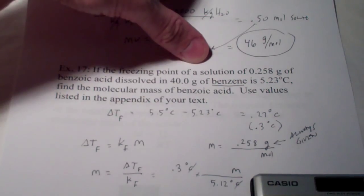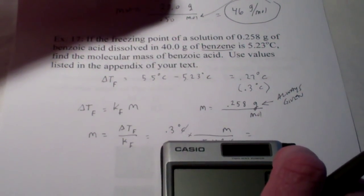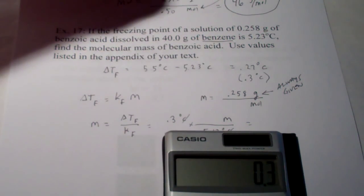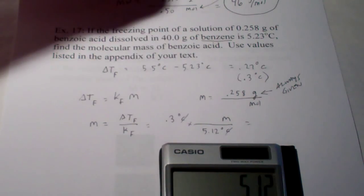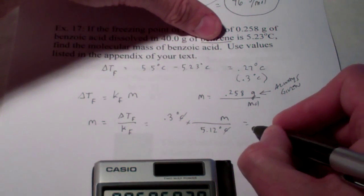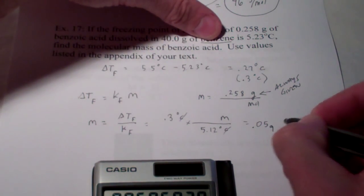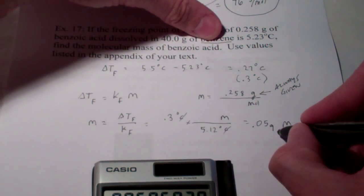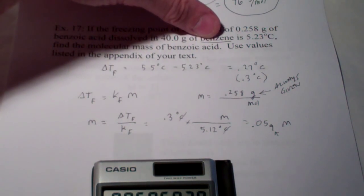So, once again, unfortunately, we only have that one significant figure. Let's see what our calculator says we have. 0.3 divided by 5.12 gives us 0.059 molal. I'm going to carry that extra digit here and then we'll round off to 1 sig fig when I'm finished.